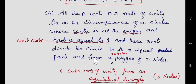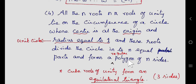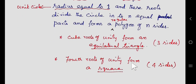In general, all the nth roots of unity divide the circle into n equal parts and form a regular polygon, where all the sides are equal. In cube roots of unity we get an equilateral triangle, and in 4th roots of unity all 4 sides are equal, giving a square. So the roots lie on the circumference of a unit circle.